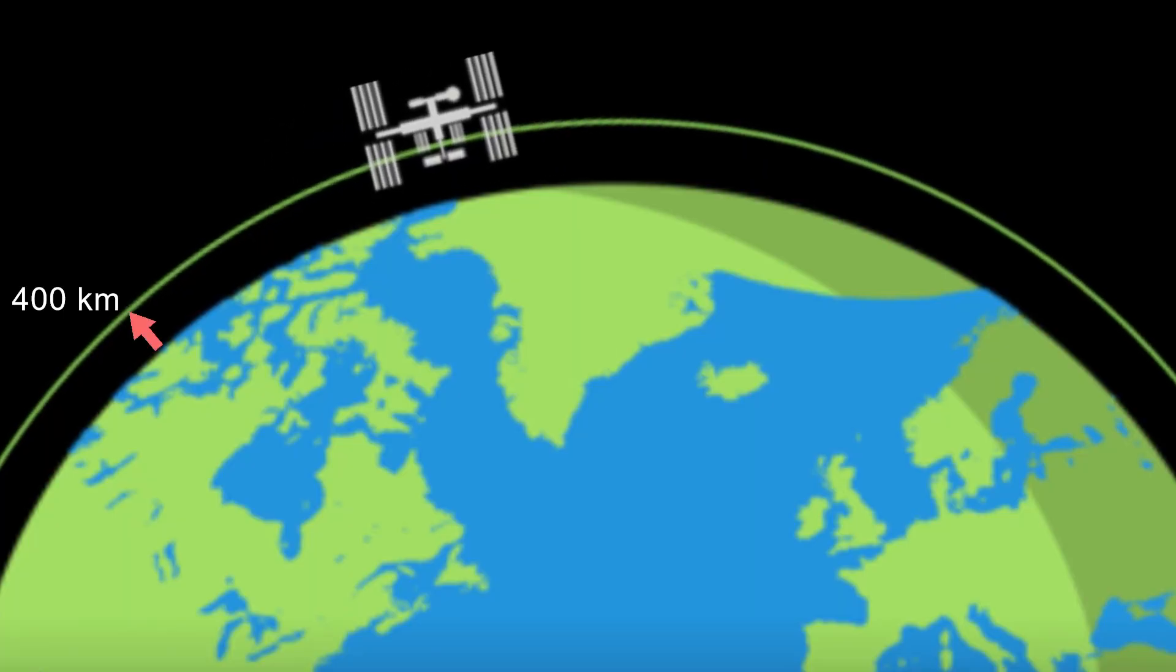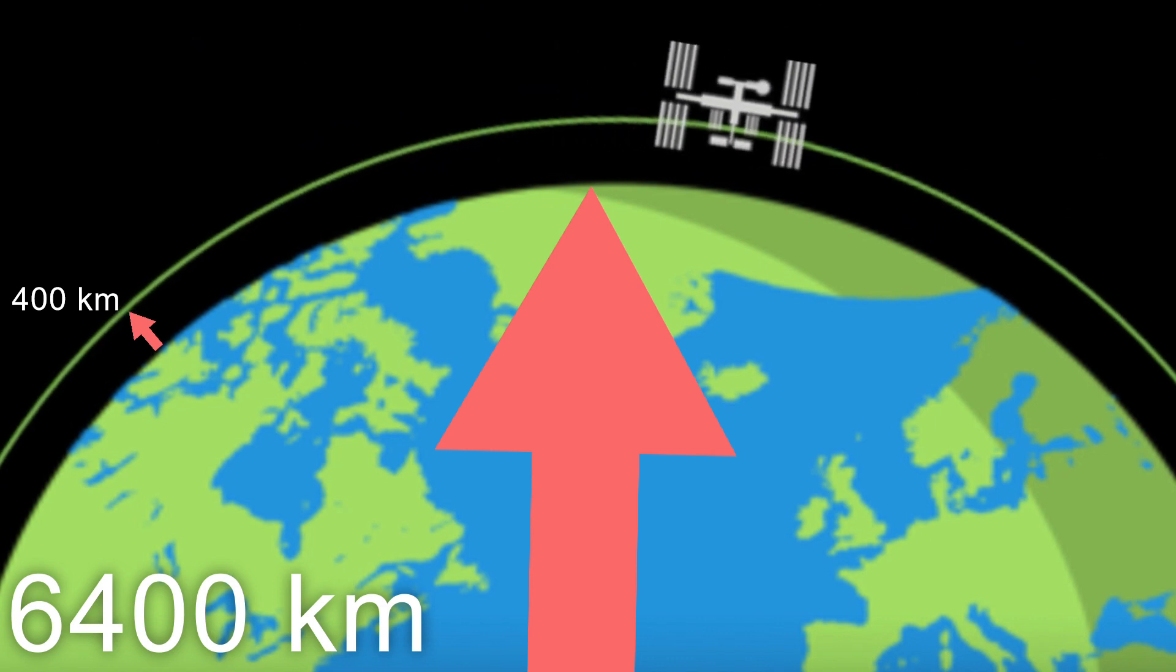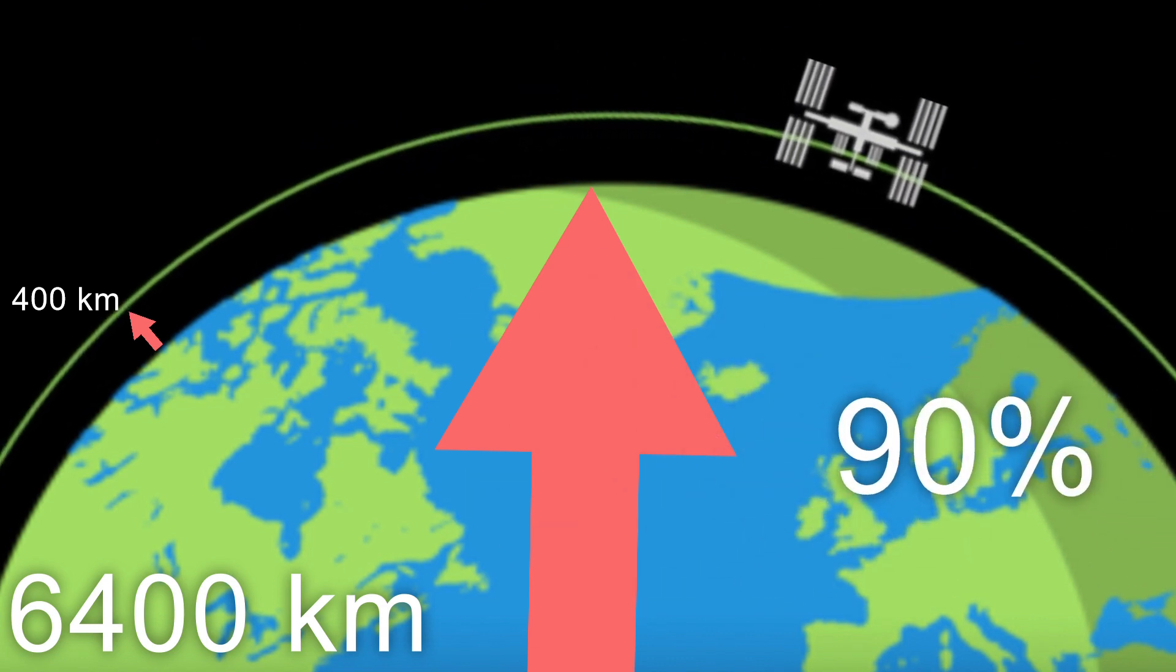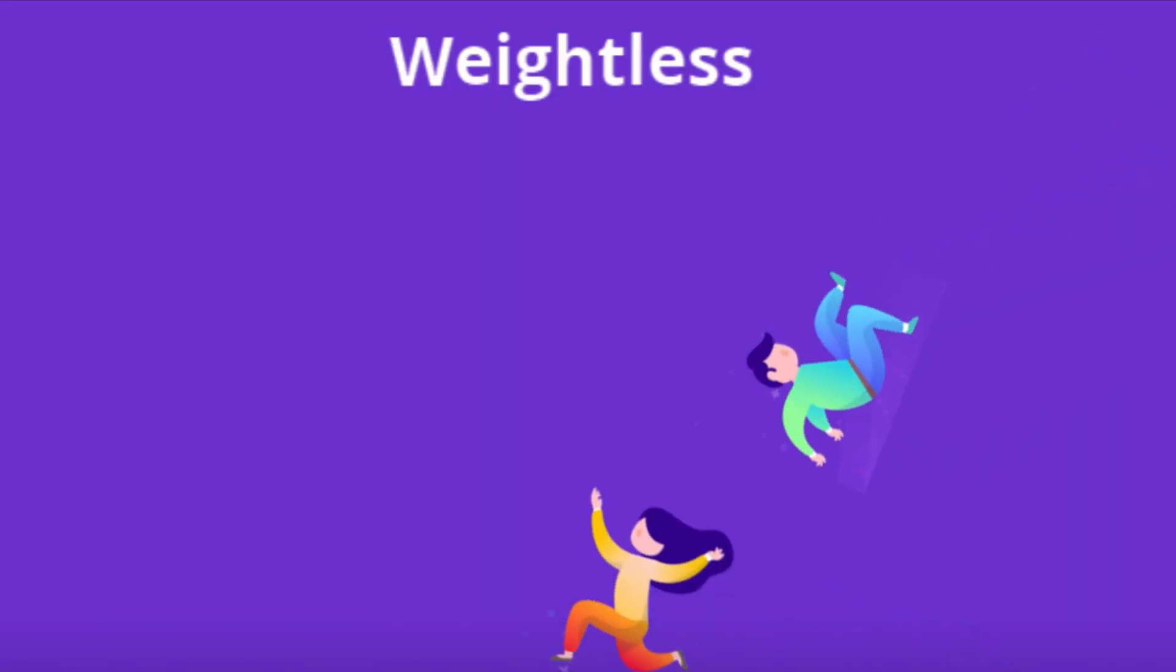Despite what most people believe, the International Space Station orbits at only 400 km above the Earth's surface and feels 90% of the gravity we feel at the surface. Yet everything in the ISS is weightless.